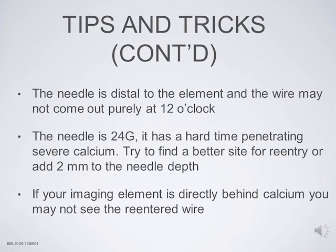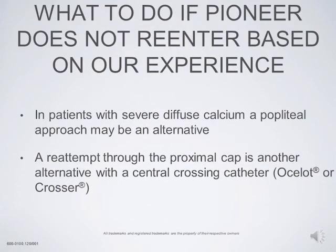If your imaging element is directly behind calcium, you may not see the reentered wire, so angiography will be helpful. If the Pioneer does not reenter in patients with severe diffuse calcium, you may have to try another approach such as popliteal, tibial, or pedal. A reattempt through the proximal cap is another alternative — try to start another line coming down through the vessel and consider a central crossing catheter as an added benefit.